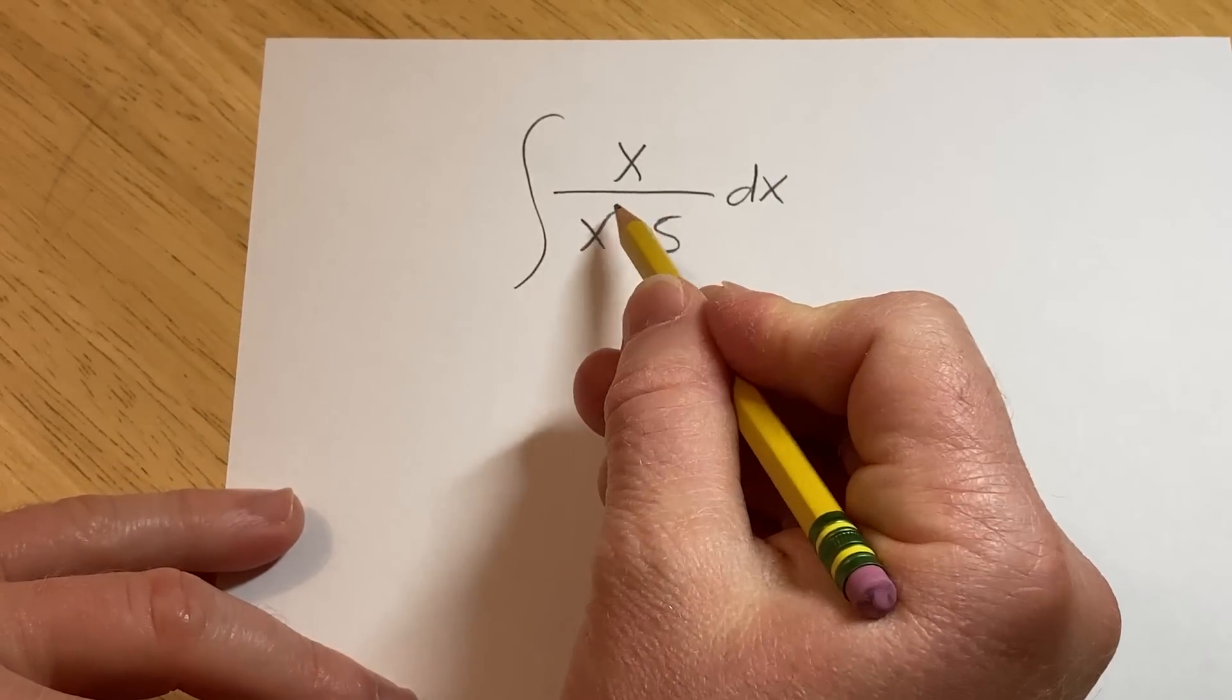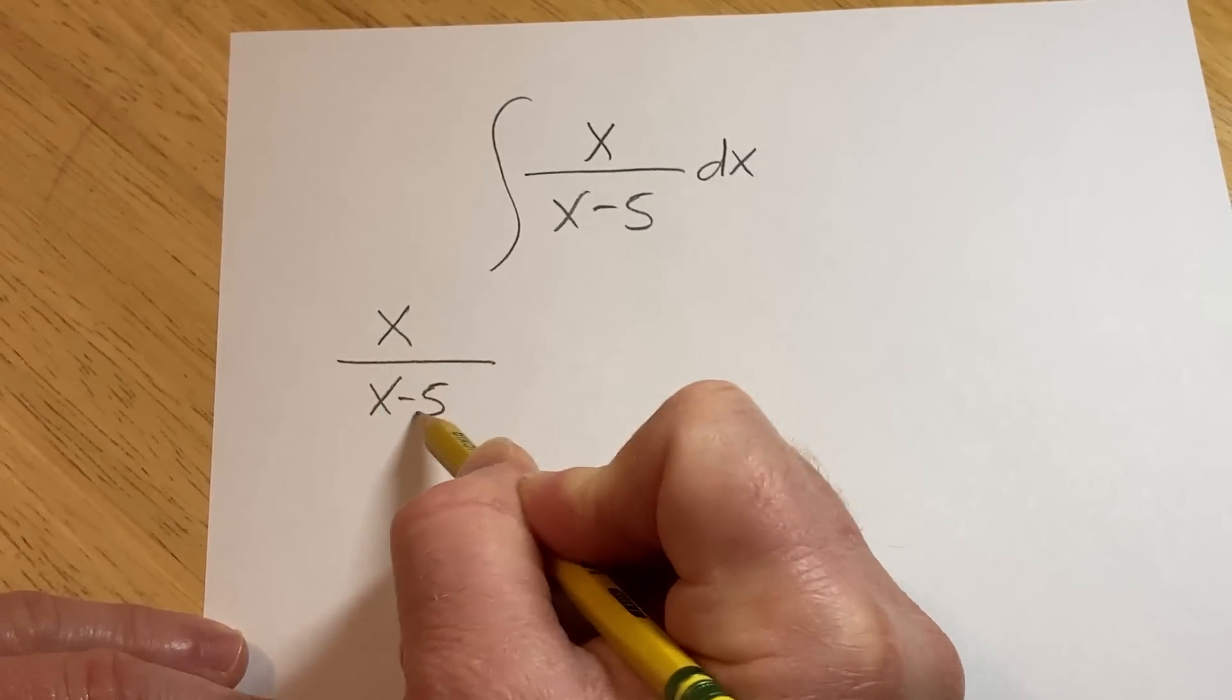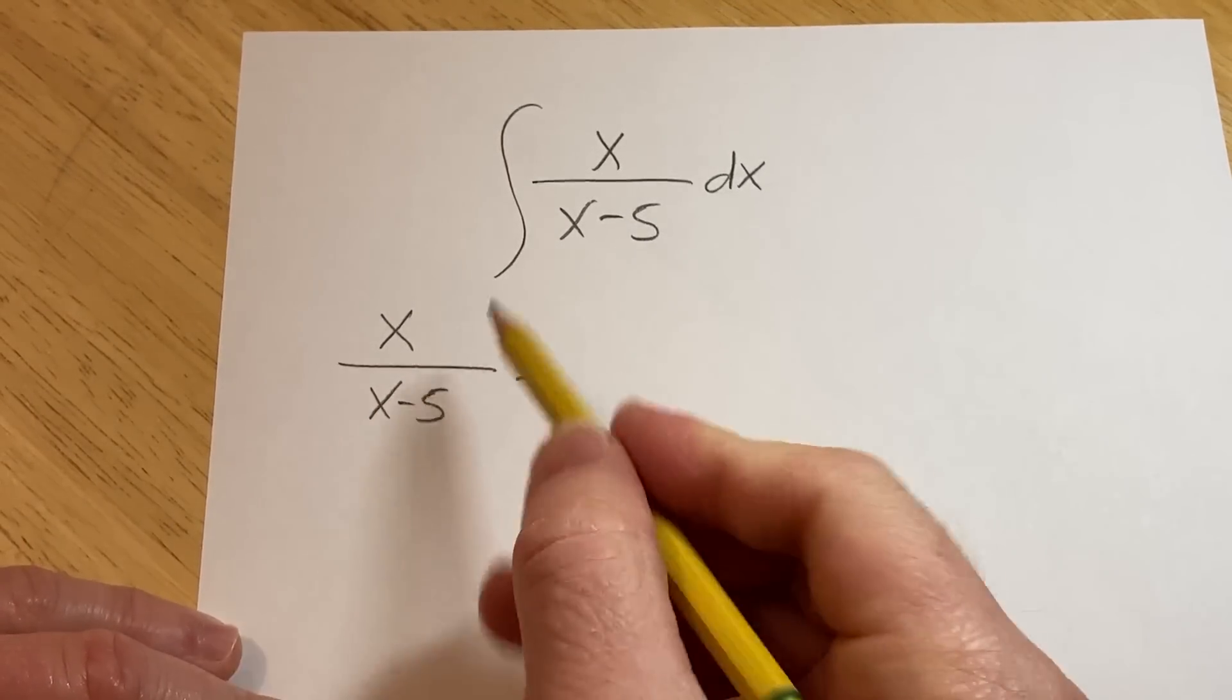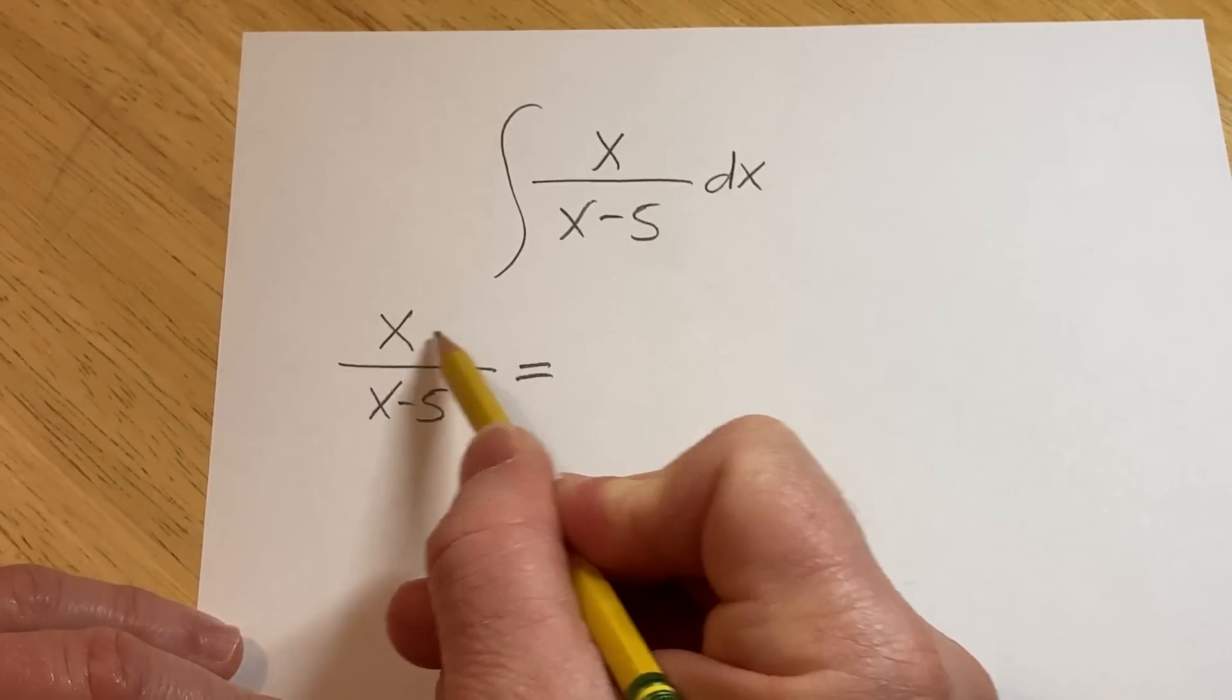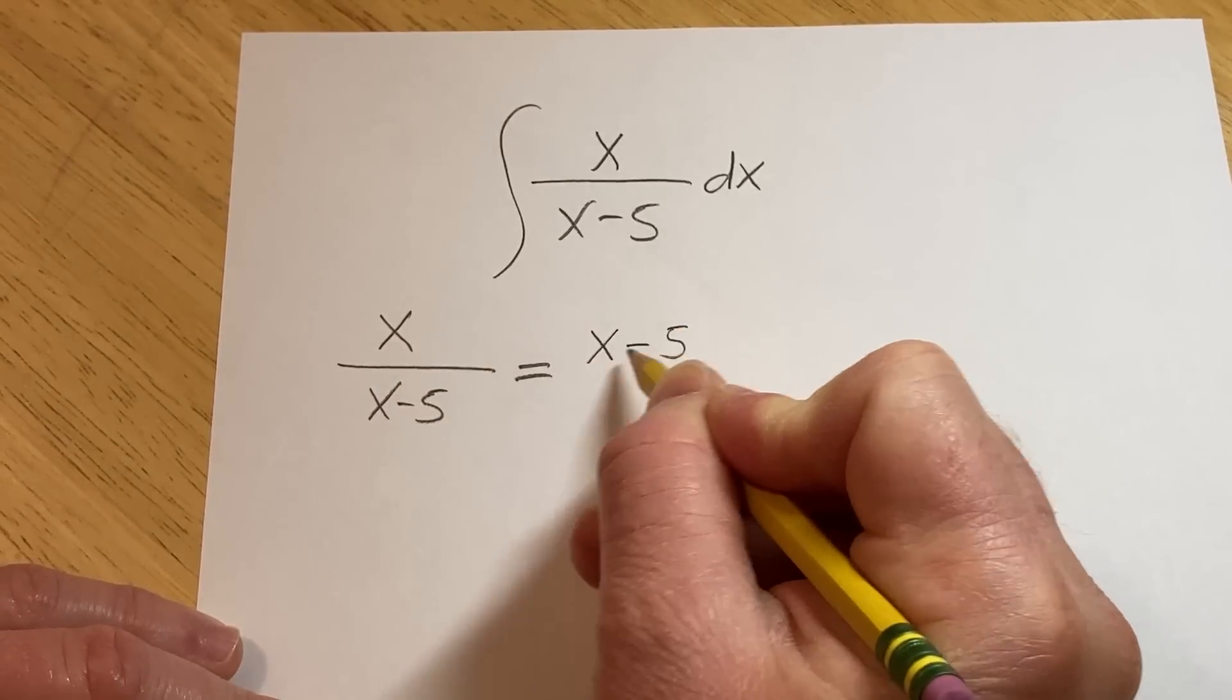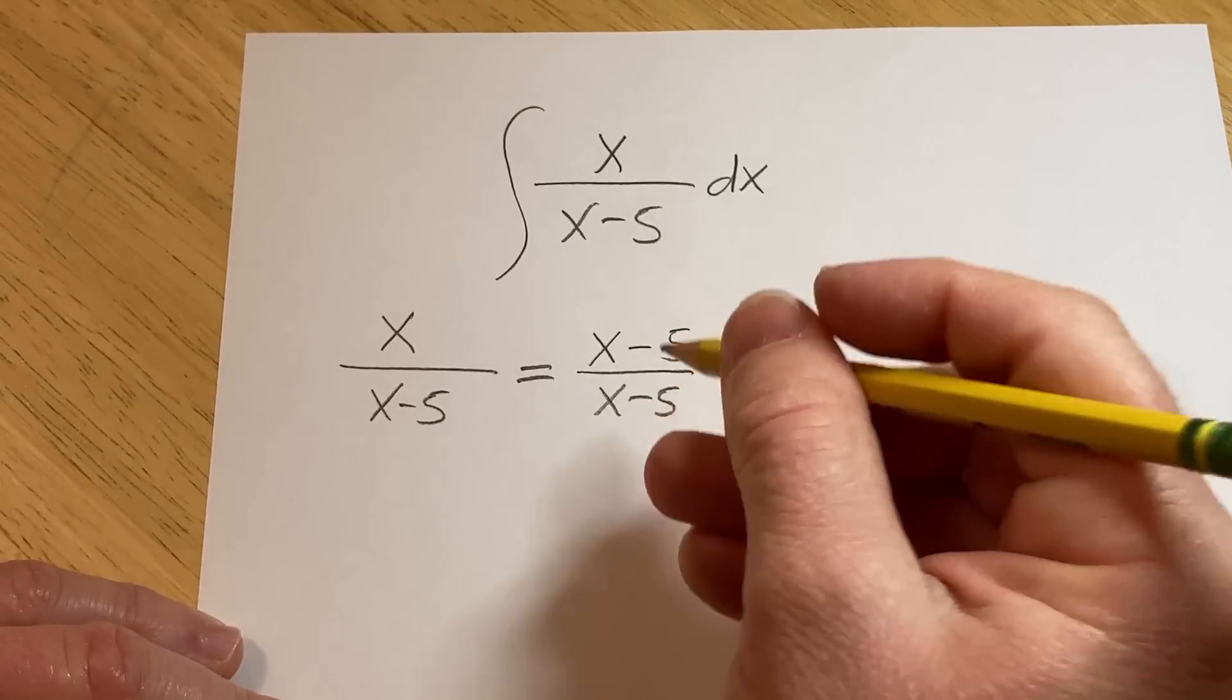I'm going to start by writing down the integrand. So we have x over x minus 5. This is a very powerful technique that you can use. Basically it would be really nice if there was an x minus 5 here so you could cancel. So what you do is you just put it there, because you can do whatever you want, and then you fix it later.